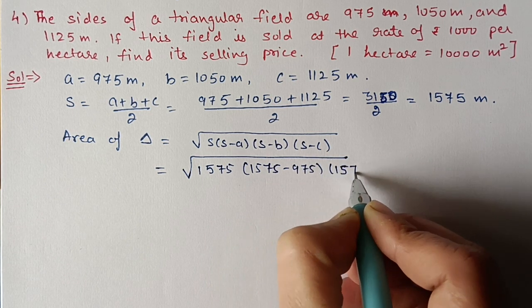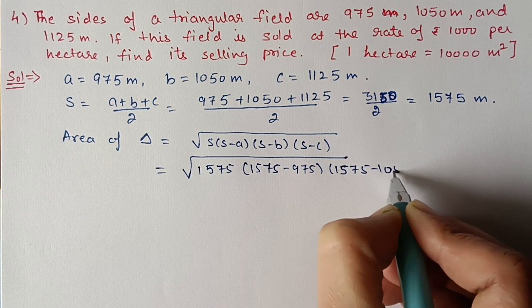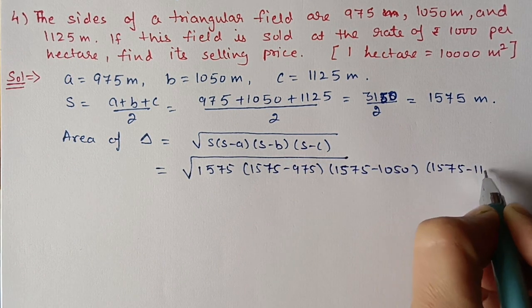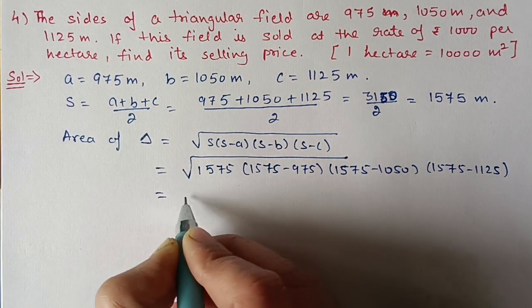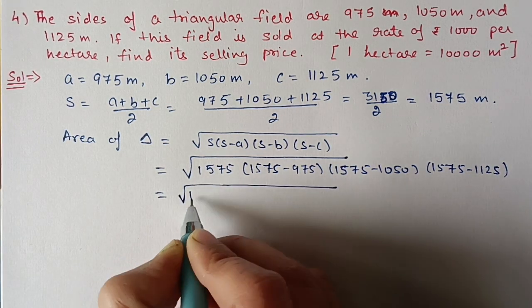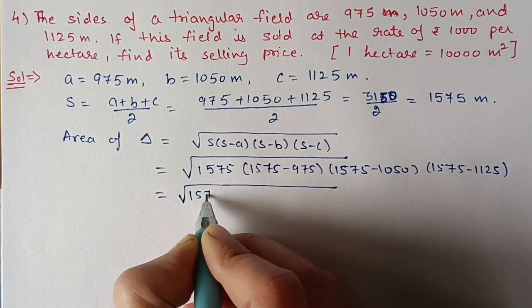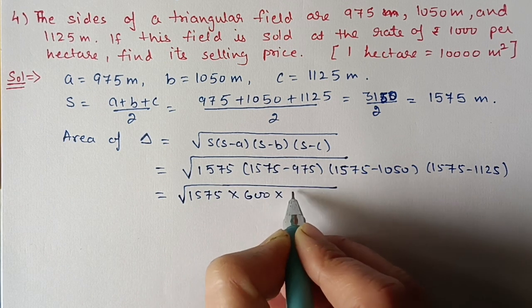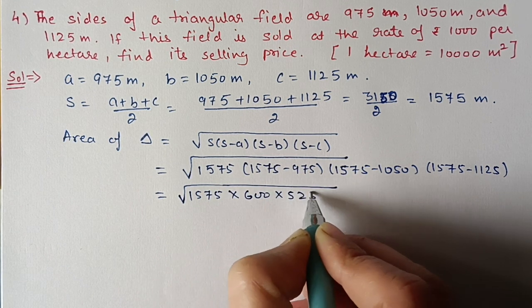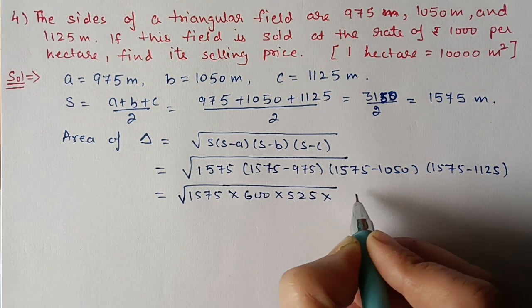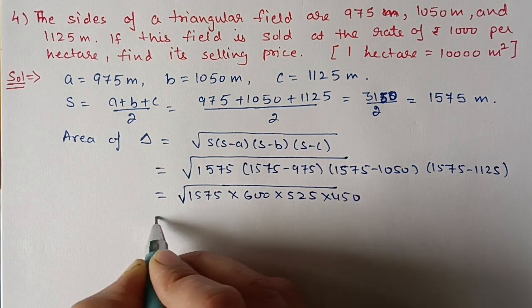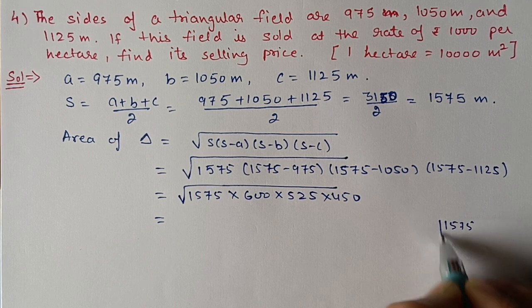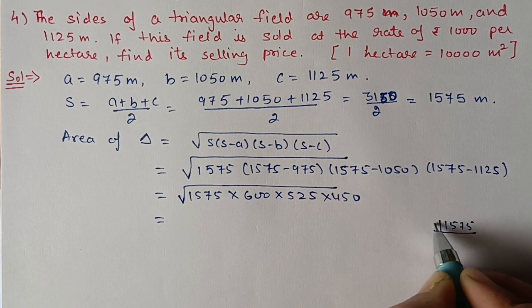Area = √[1575 × (1575−975) × (1575−1050) × (1575−1125)] = √[1575 × 600 × 525 × 450]. We do prime factorization of these numbers.